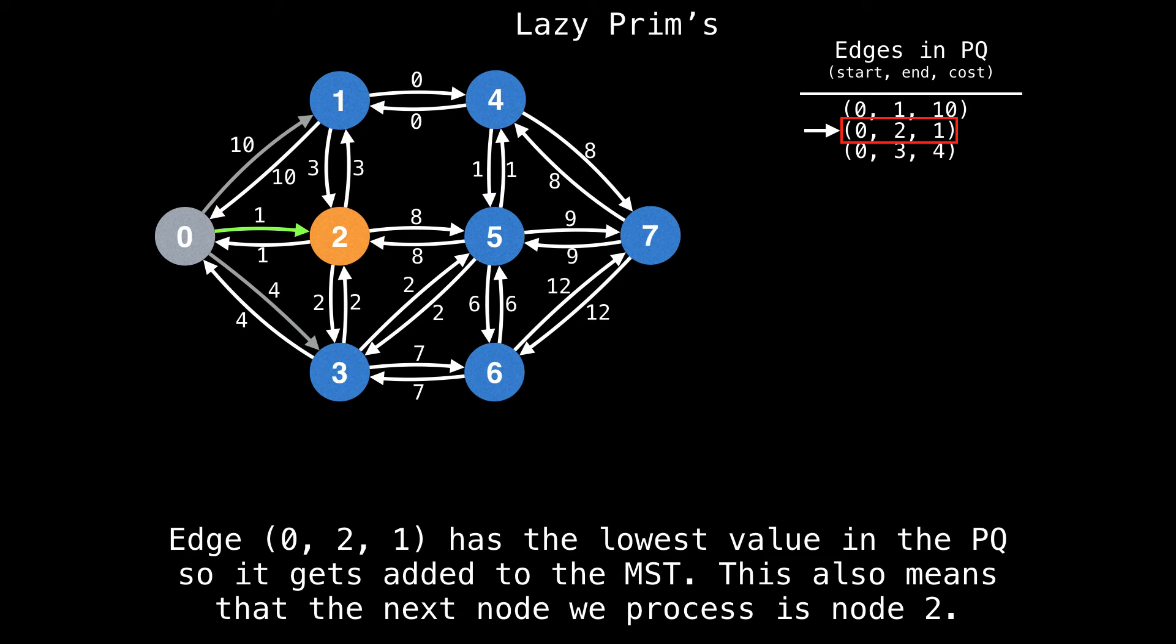Now we look inside our priority queue and we pull the next most promising edge and add it to the minimum spanning tree. The edge from zero to two with a cost of one has the lowest value in the priority queue, so it gets added to the minimum spanning tree. This also means that the next node we process is node two.